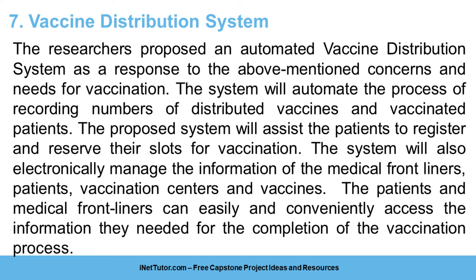The researchers proposed an automated vaccine distribution system as a response to the above-mentioned concerns and needs for vaccination. The system will automate the process of recording numbers of distributed vaccines and vaccinated patients. The proposed system will assist the patients to register and reserve their slots for vaccination. The system will also electronically manage the information of medical frontliners, patients, vaccination centers, and vaccines. The patients and medical frontliners can easily and conveniently access the information they need for the completion of the vaccination process.